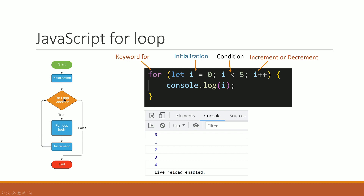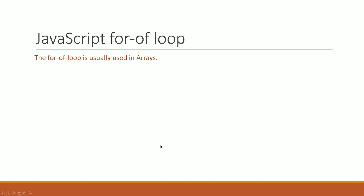Condition check — 4 less than 5 is true. Console.log prints 4. Then increment: 4 plus 1 is 5. Then check: 5 less than 5 is false — condition is false, so we stop. Output printed: 0, 1, 2, 3, 4.